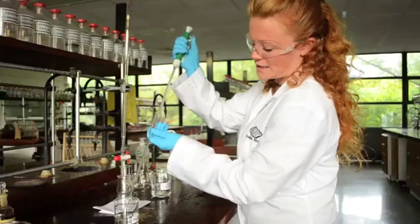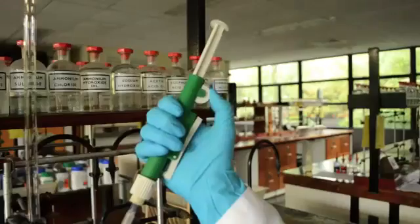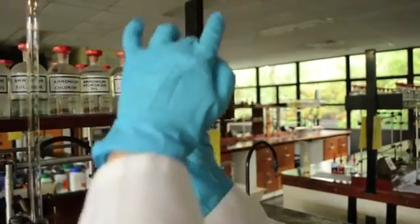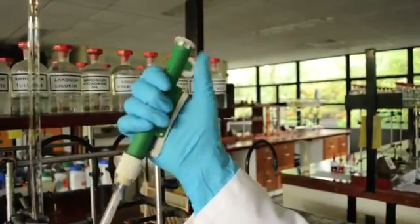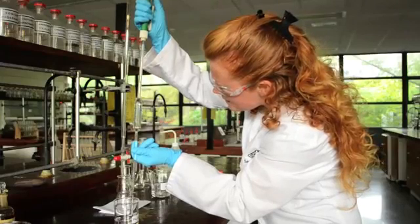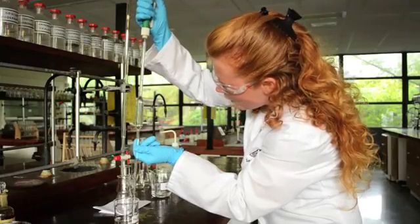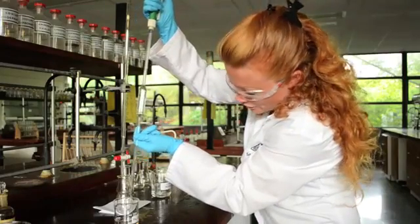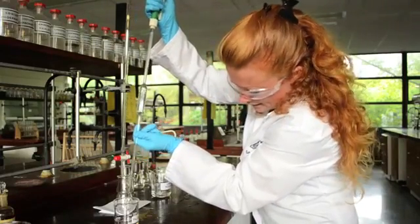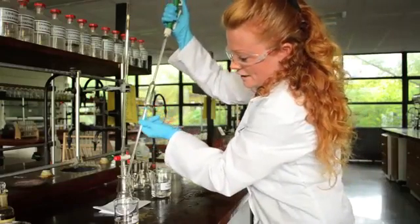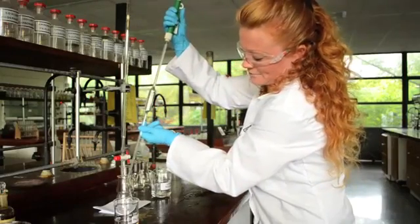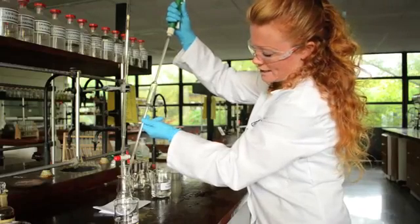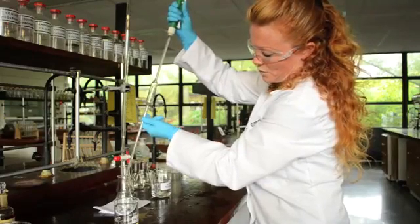I fill the pipette, like so, all the way up to the graduation mark, so that the bottom of the meniscus is sitting perfectly on the graduation mark at eye level. I'm going to make sure there are no bubbles in the pipette, and then I'm going to transfer to the conical flask, like so. The conical flask has been rinsed out with deionized water prior to this transfer.